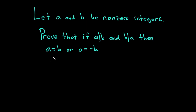Hello. In this video we're going to do a mathematical proof. The question reads as follows: let a and b be non-zero integers. Prove that if a divides b and b divides a, then a is equal to b or a is equal to negative b. Let's go ahead and carefully work through this proof.